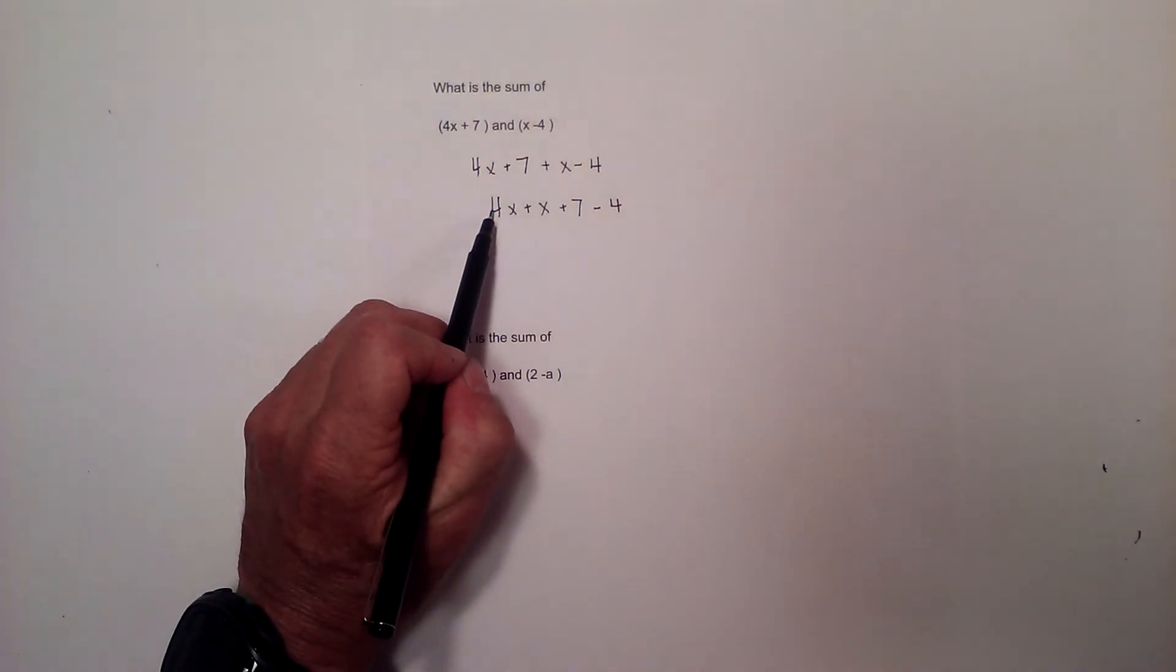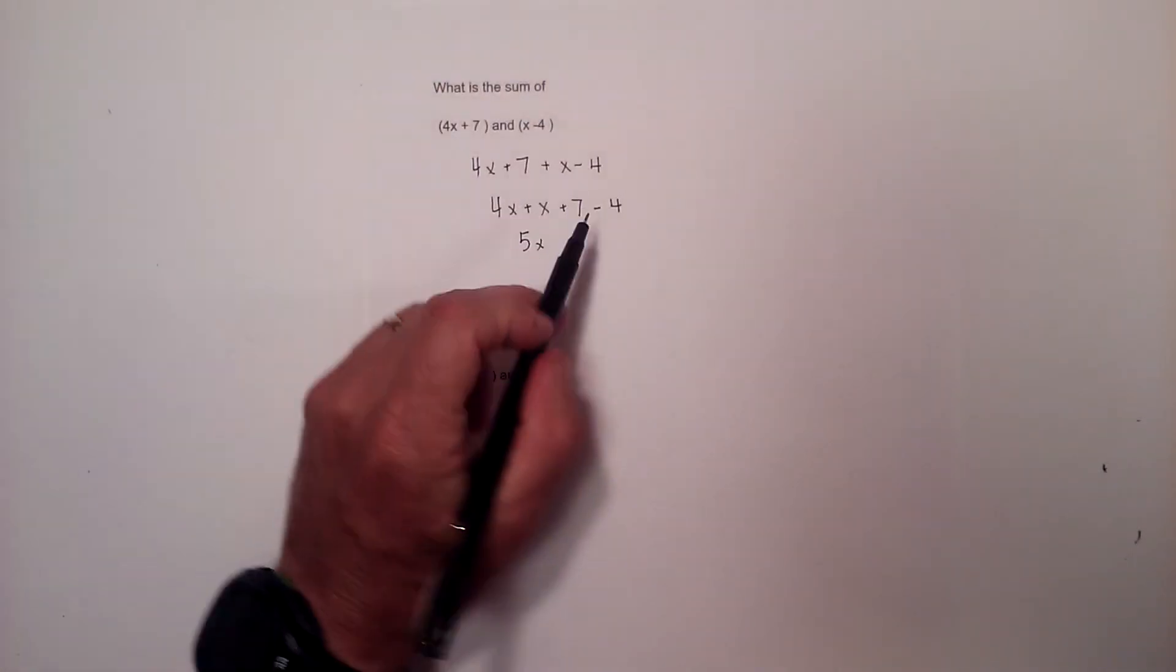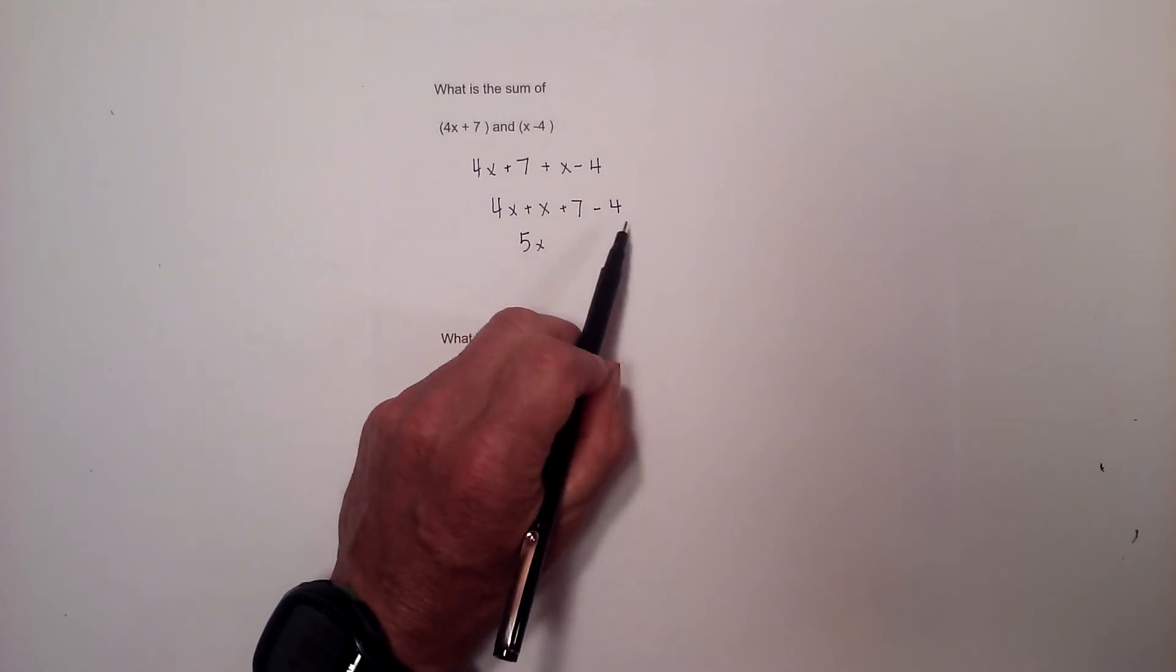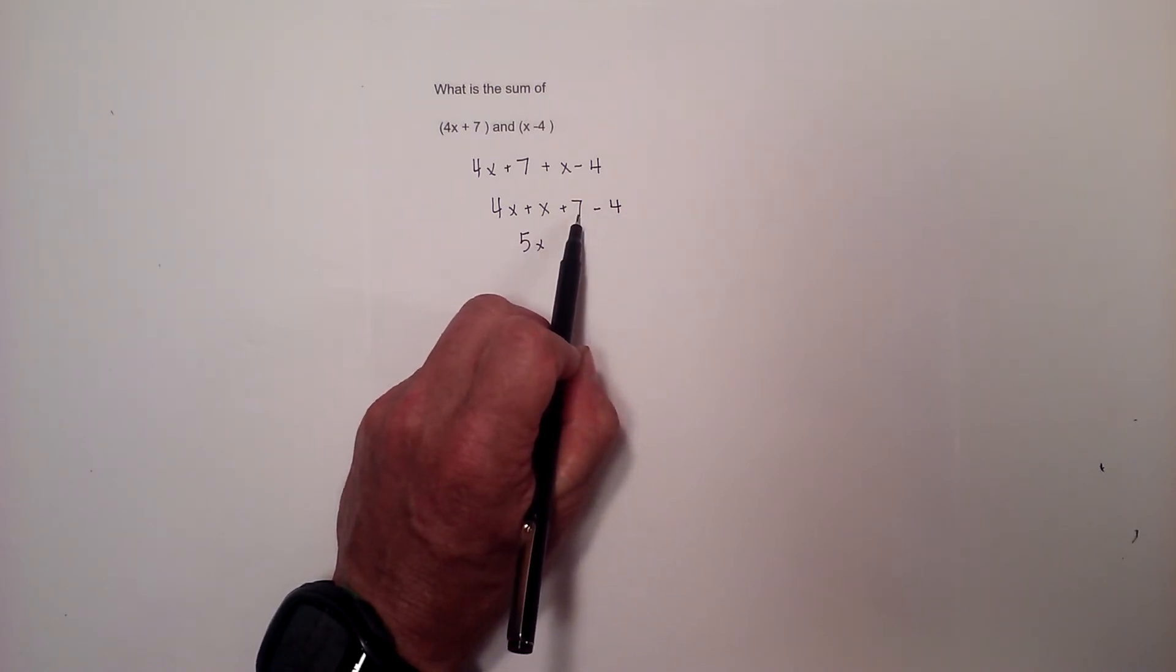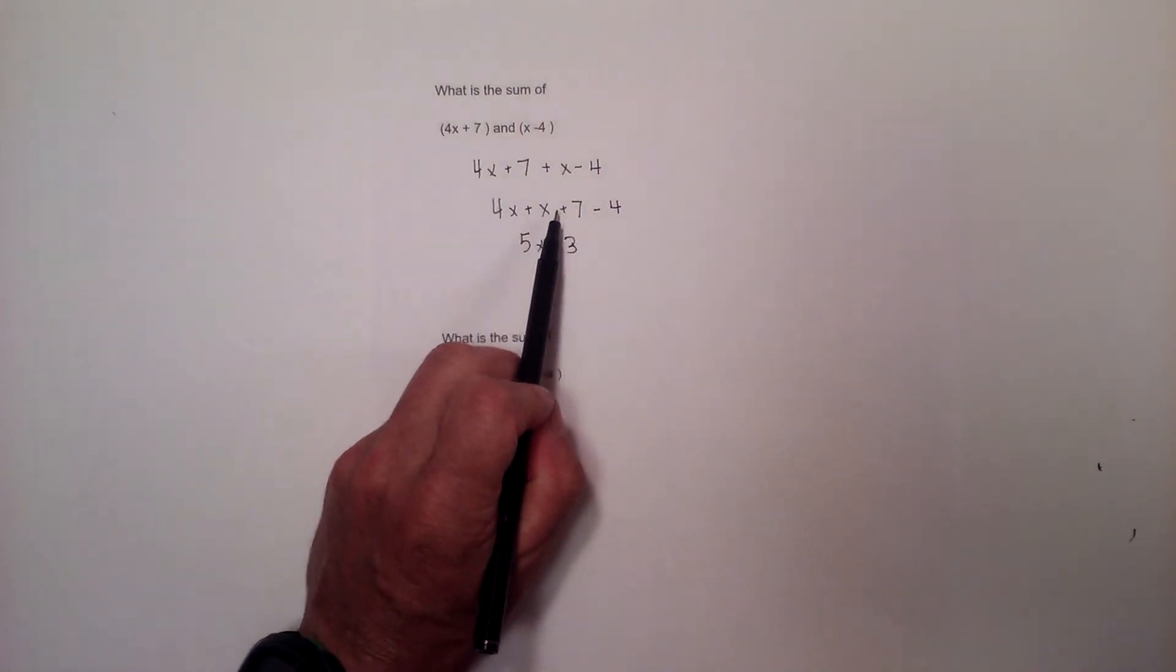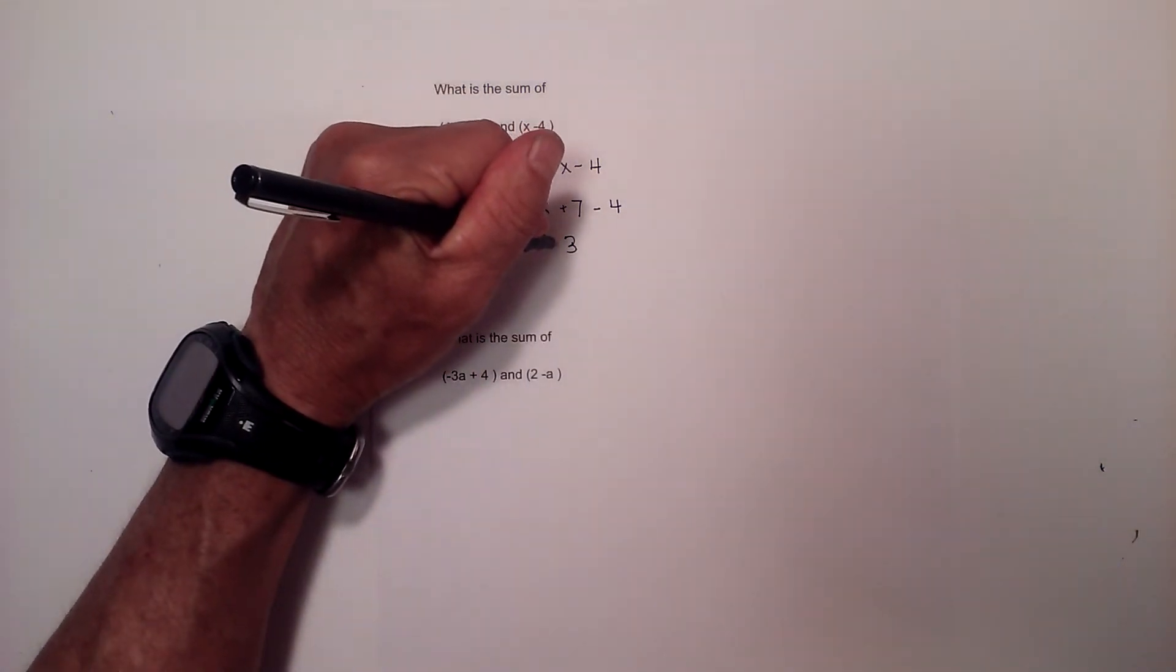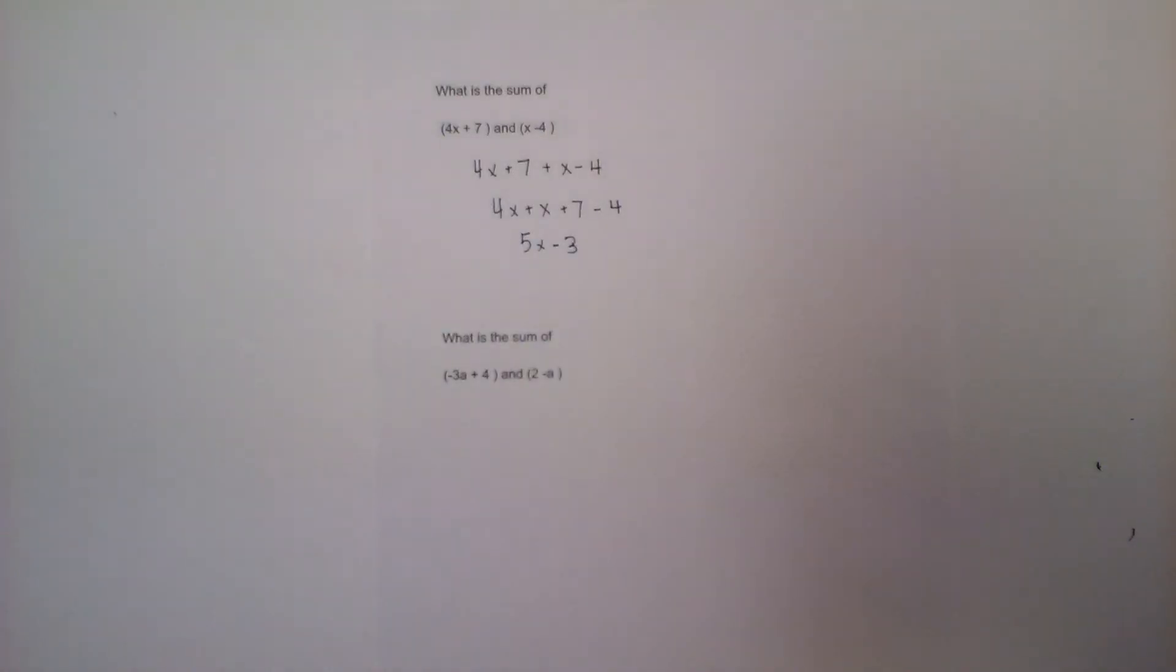And then I combine like terms. So that is 5x. And then you have two different signs, so take the difference. The difference between 7 and 4 is 3. Now is it a positive or negative 3? Well 7 is larger than 4, so it would be a negative 3. So it is 5x minus 3.